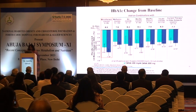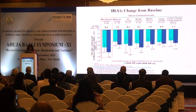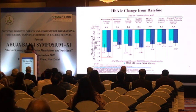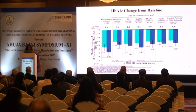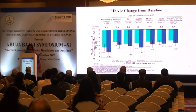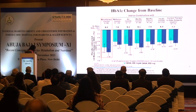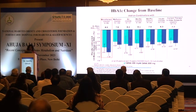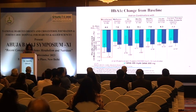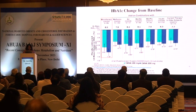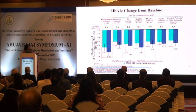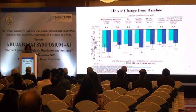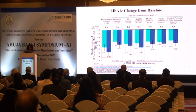Regarding the effect on HbA1c with canagliflozin 300, the reduction of HbA1c is minus 1.1% with canagliflozin 300, and even with monotherapy canagliflozin 100 the reduction is 0.9%. When canagliflozin is added with other molecules, canagliflozin 300 fares well compared to canagliflozin 100.